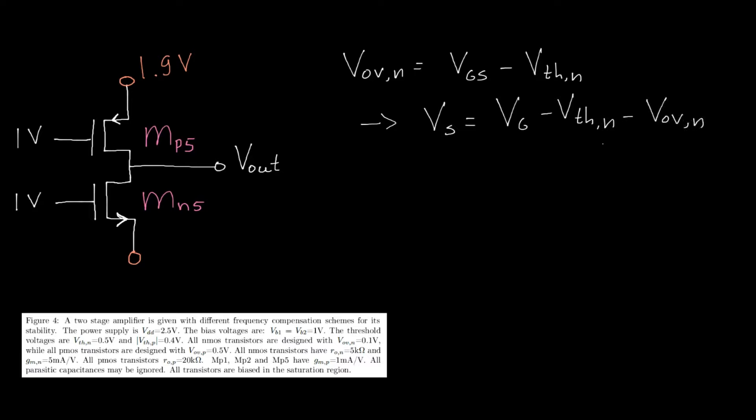And we can now find all these values in the caption of the figure again, where the gate voltage is 1 volt, the threshold voltage is 0.5 volts, and the overdrive voltage is 0.1 volts. So we have a voltage at the source of 0.4. And we can now fill that in on the figure.